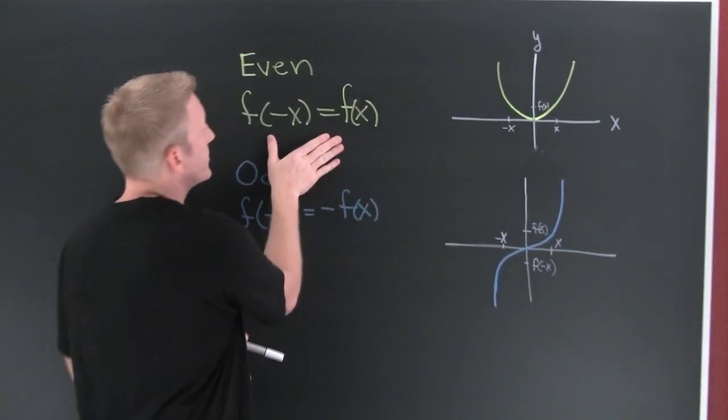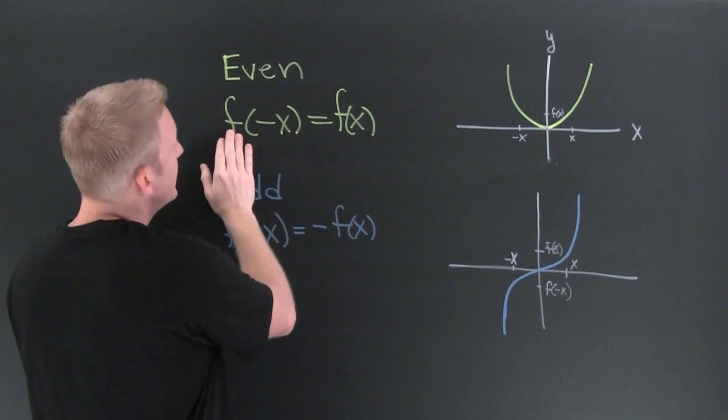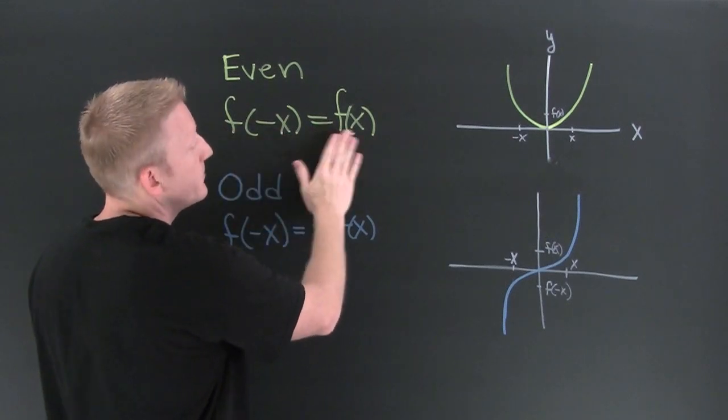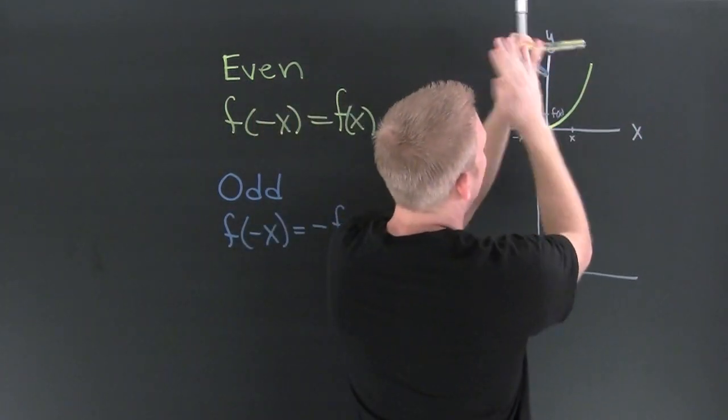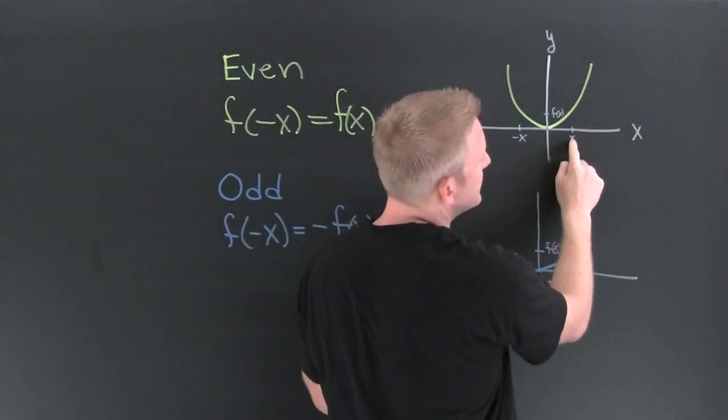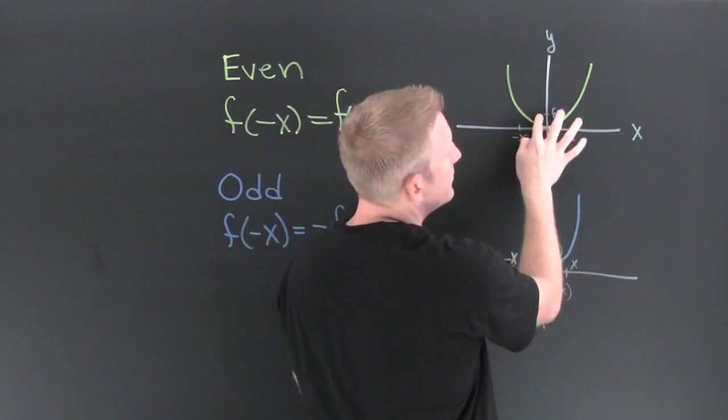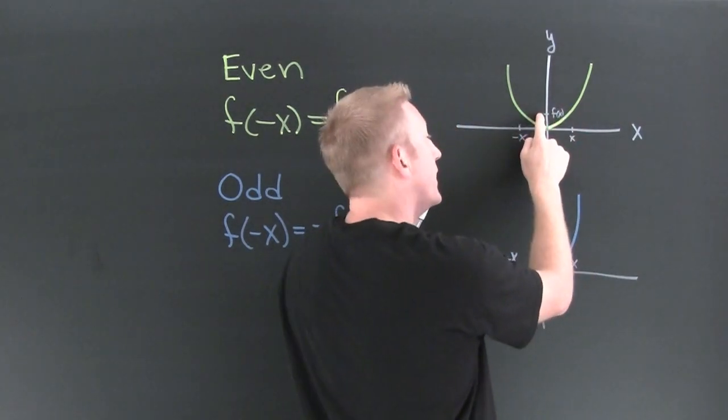So an even function is going to have this property that f of minus x is going to be f of x. What does that mean? That means symmetry across the y-axis. If we evaluate a function at x, we see its y value is f of x.